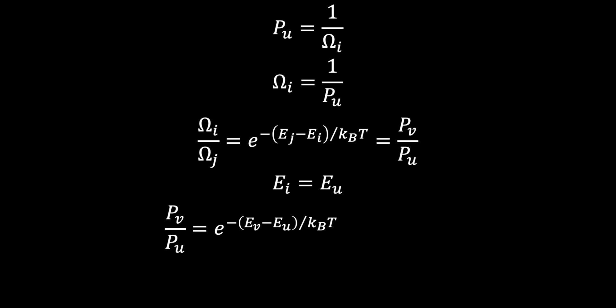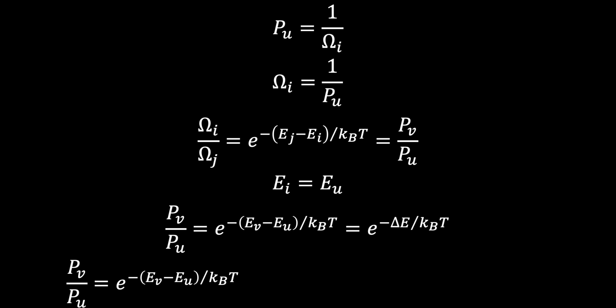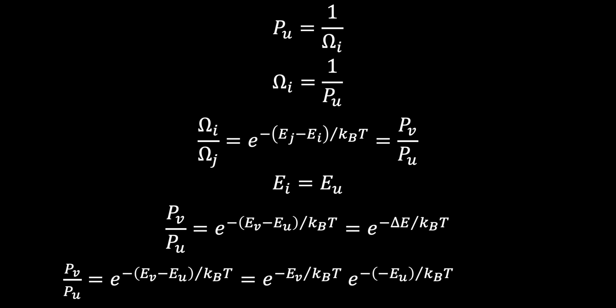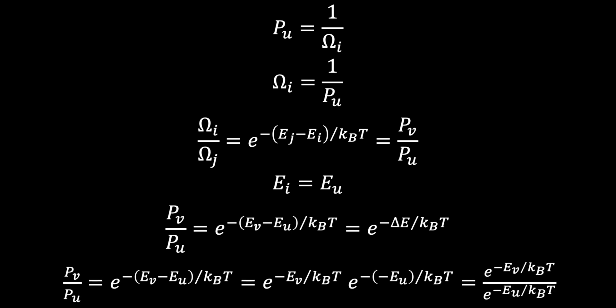We can rewrite the Boltzmann factor in a couple of ways. The first is expressing the difference in energies as delta energy, but note that the final state is v and the initial state is u — forgetting this will give the wrong sign. My personal favorite form uses rules of exponents to separate the expression into a numerator and a denominator so that each state appears on only one side, though sometimes you only have the relative energy between states.